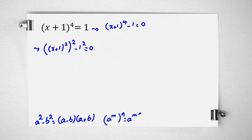In the next step, we can say it equals x plus 1 squared minus 1 times x plus 1 squared plus 1 equals 0.